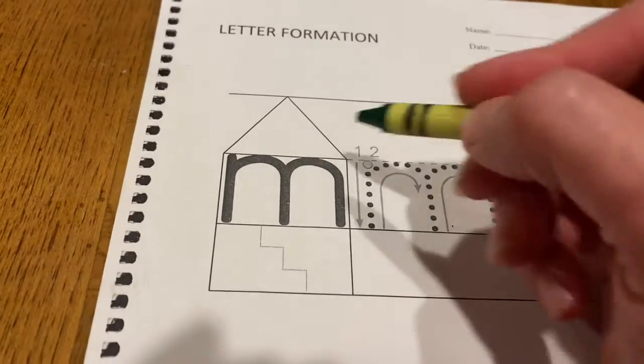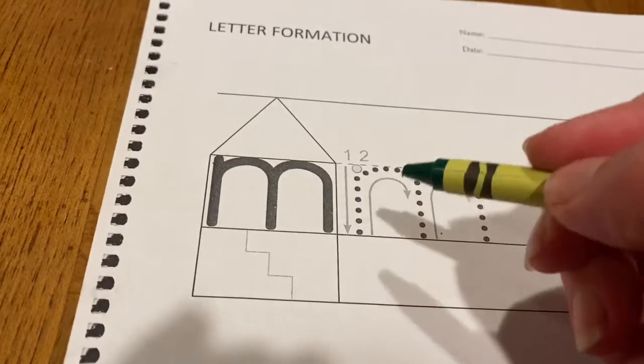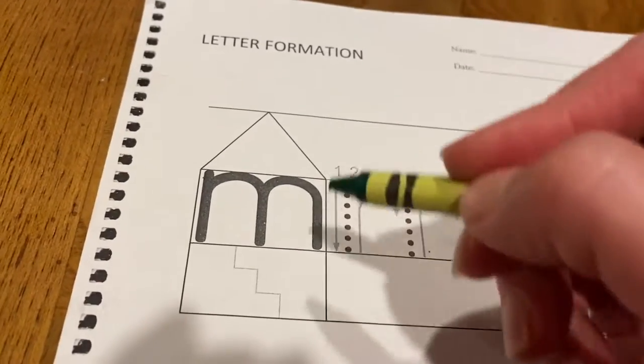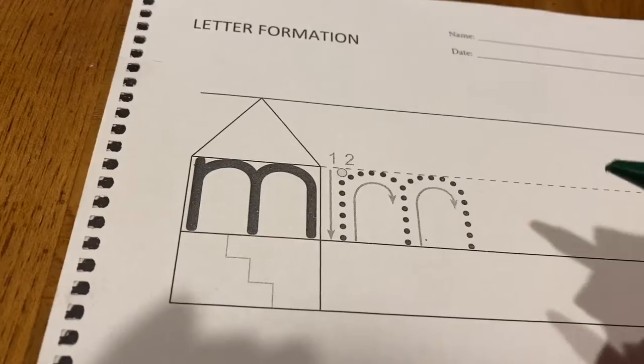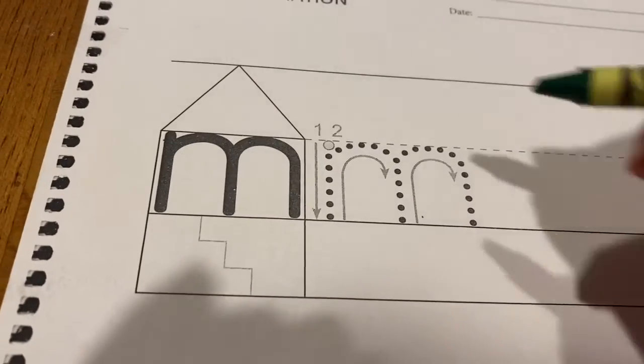Now, lowercase m lives only in the main house, not in the attic, not in the basement. This is how we make our lowercase m.